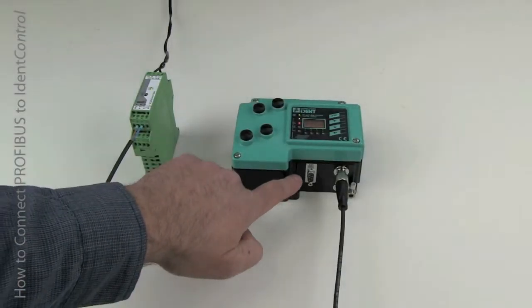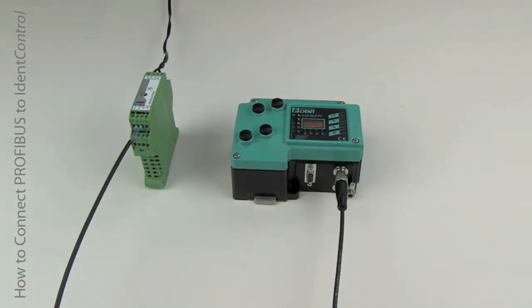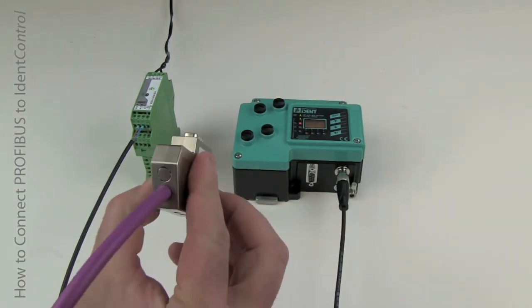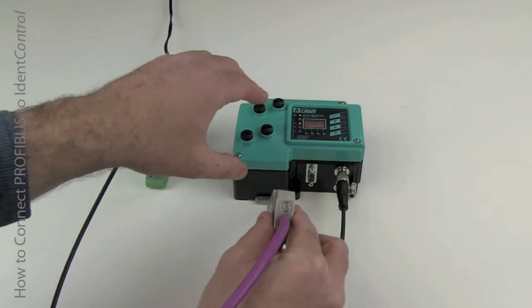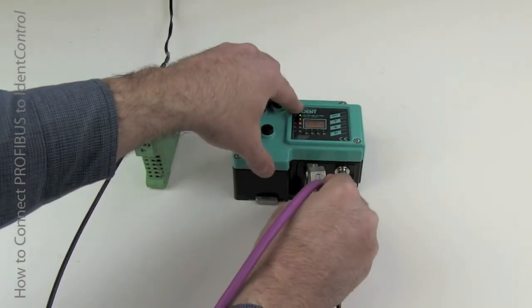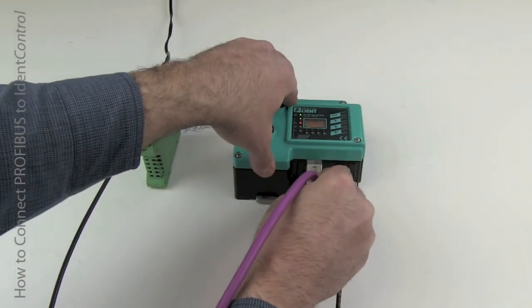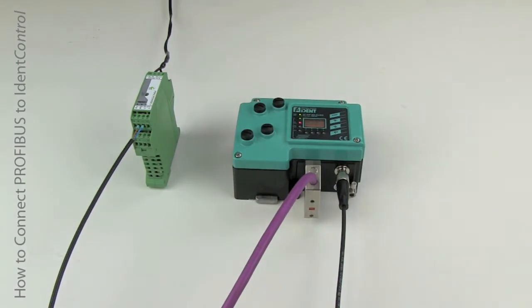There are a number of ways to connect Profibus to Identity Control. The first way I'm going to show you is with a DB9 connector. The connector itself has two ports on it for Profibus in and out, and it's got the screw connection so you can screw it down to the controller.